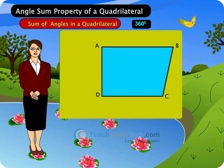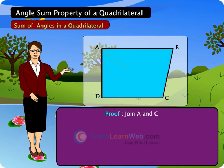Proof. Join A and C. AC becomes a diagonal.